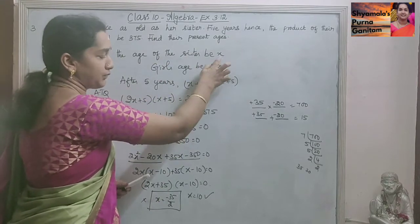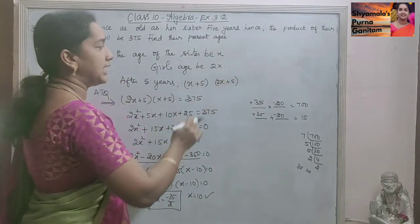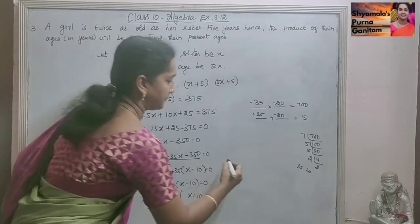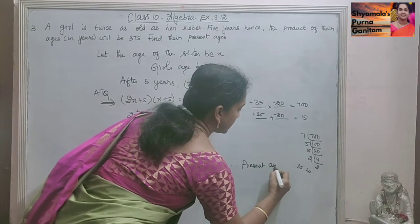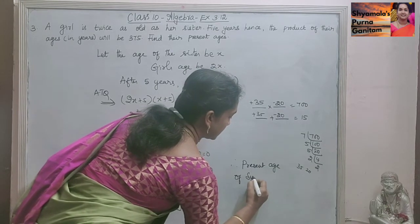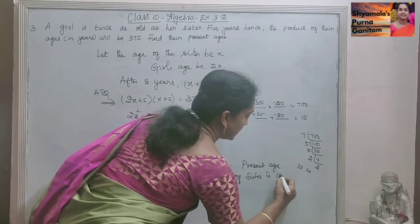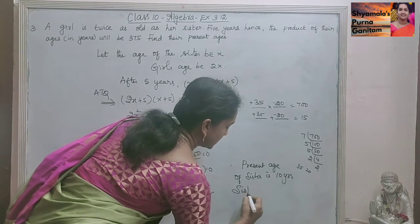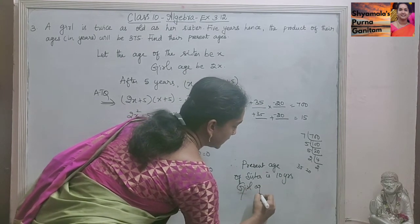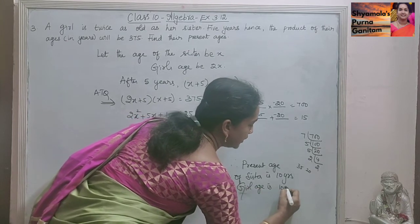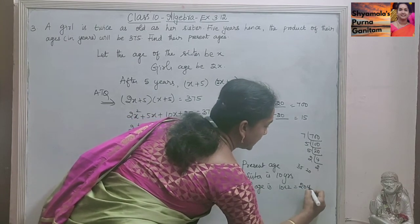So the present age of the sister is 10 and the girl's age is 10 into 2. Therefore, present age of sister is 10 years and girl's age is 10 into 2, that is equal to 20 years.